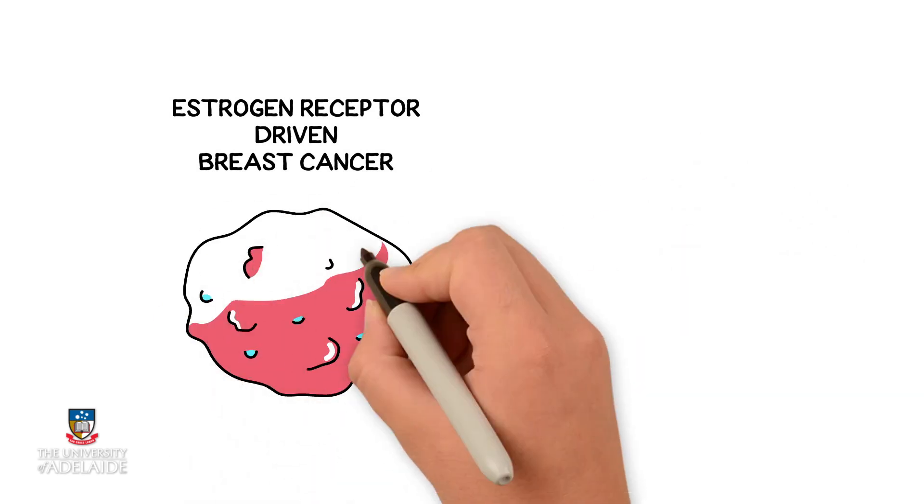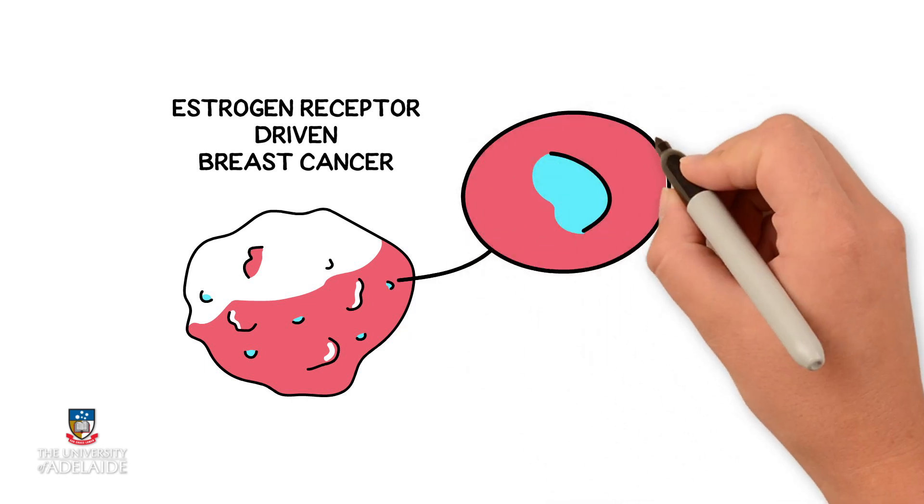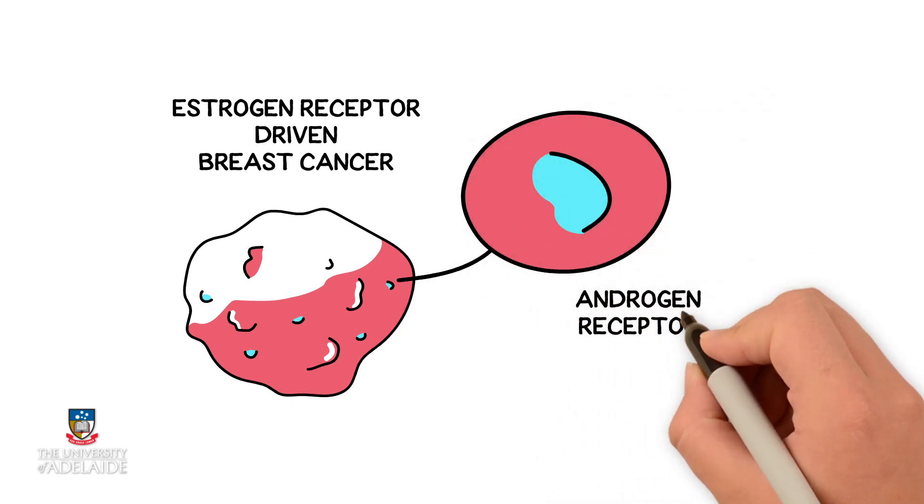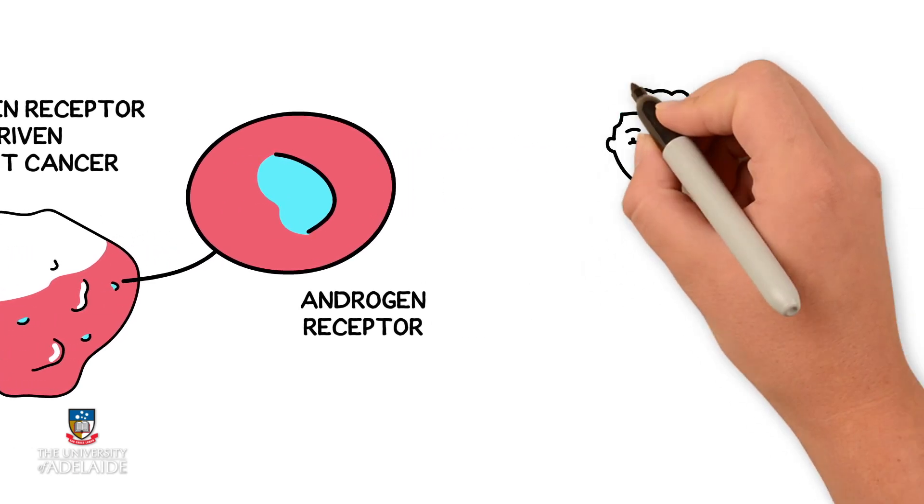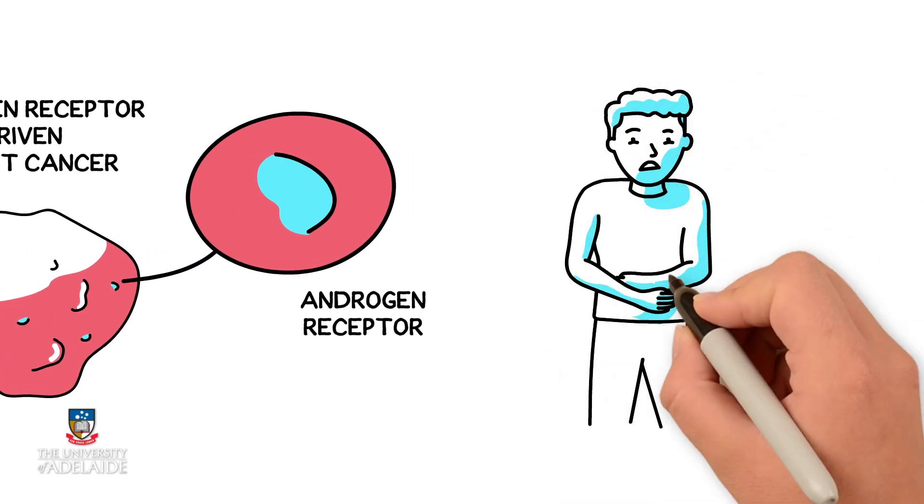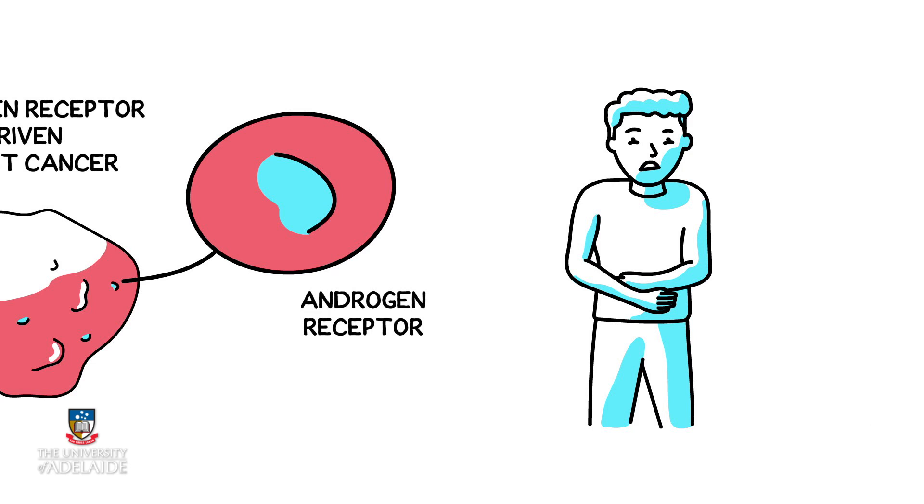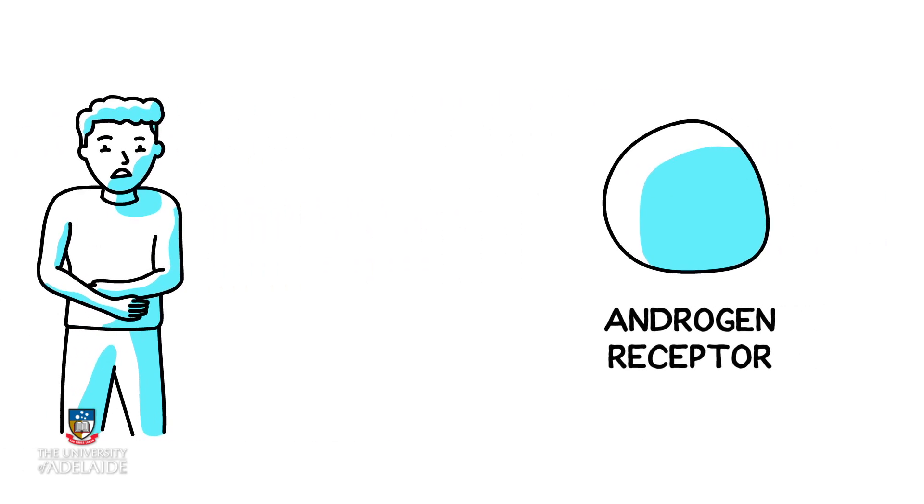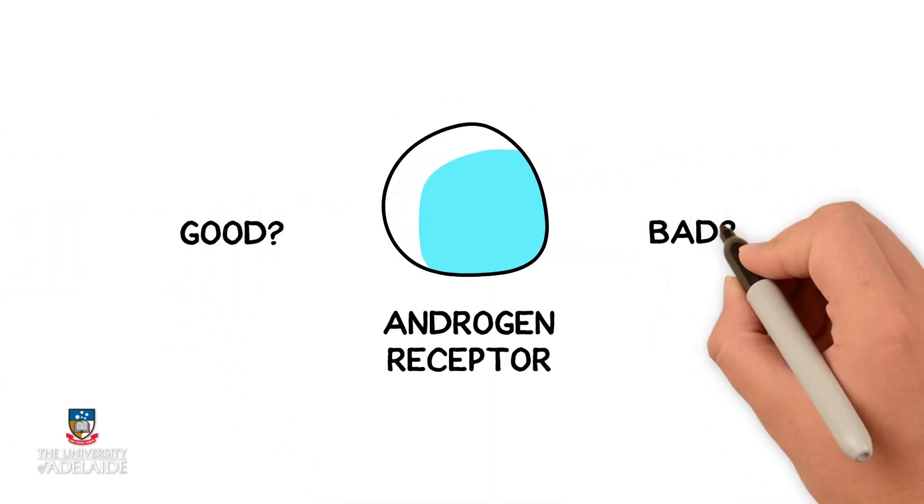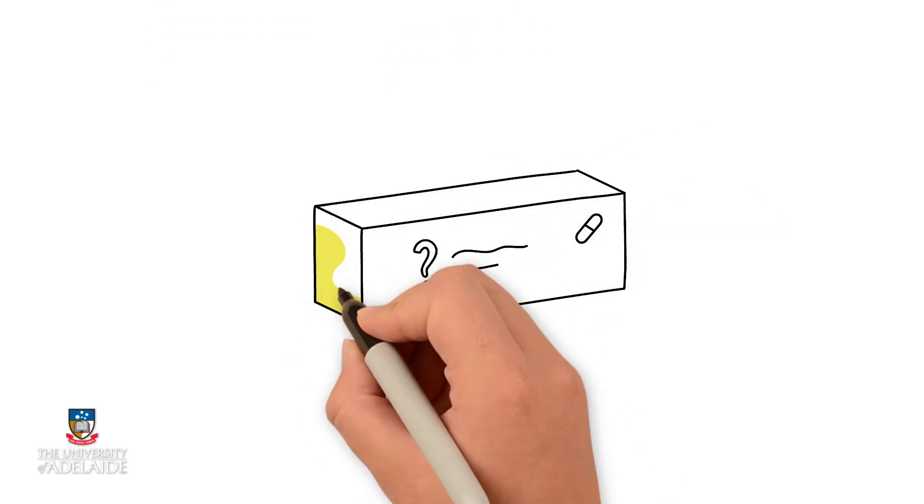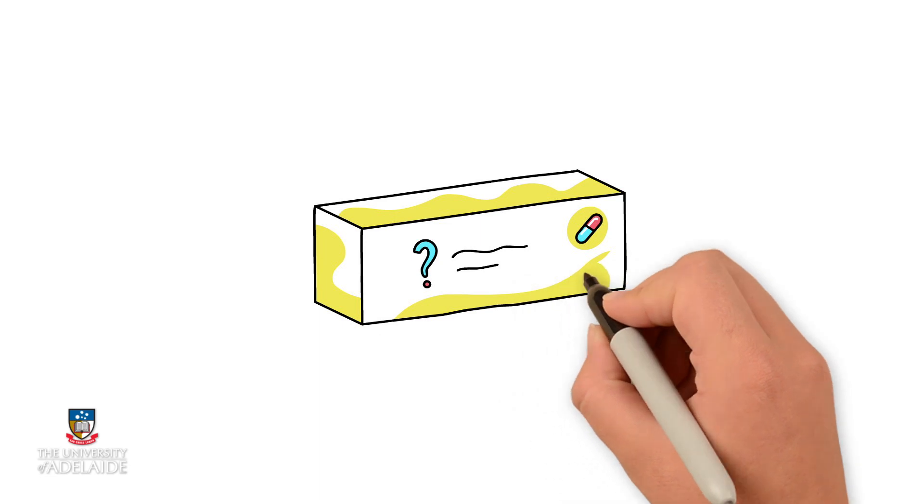On the other hand, virtually all estrogen receptor driven breast cancers also have androgen receptors. Here's where it gets confusing, because abnormal androgen receptor activity is a driver of prostate cancer. So, is the androgen receptor good or bad? Should we promote or inhibit androgen receptor activity to treat breast cancer? This uncertainty has hindered progress in developing a more effective treatment strategy.